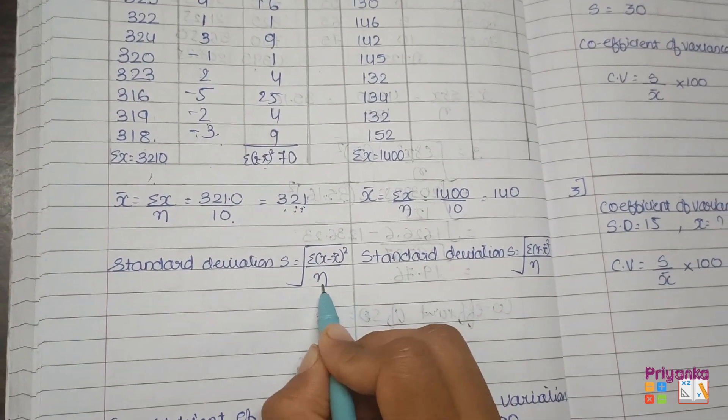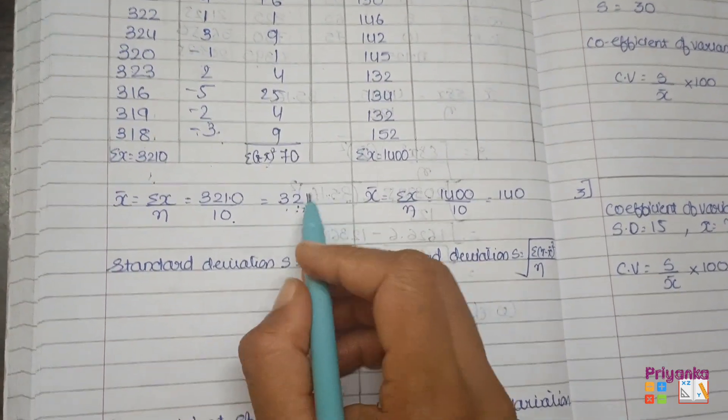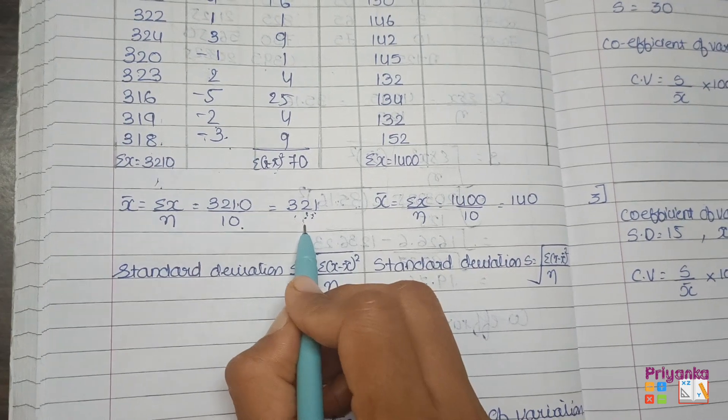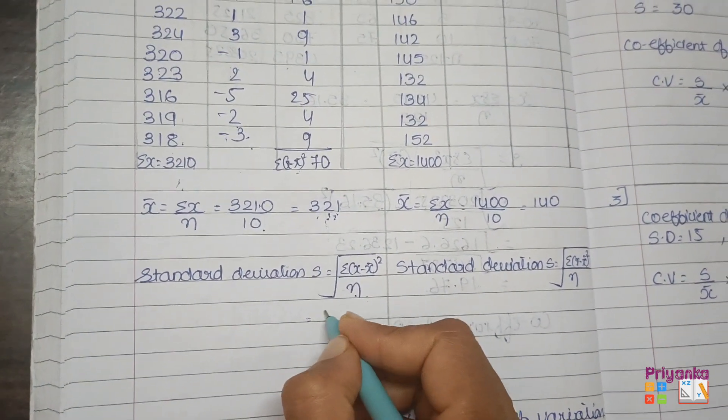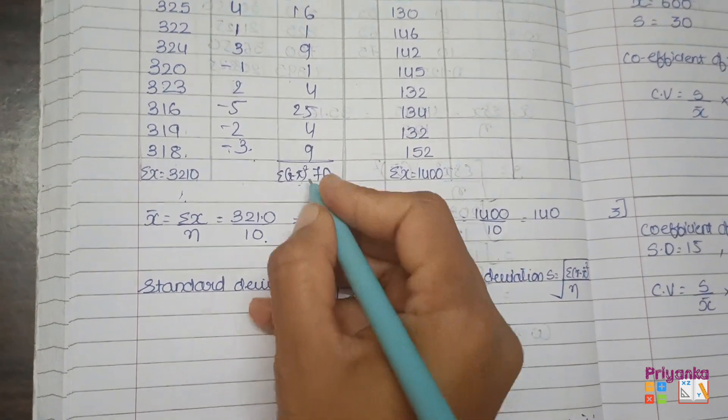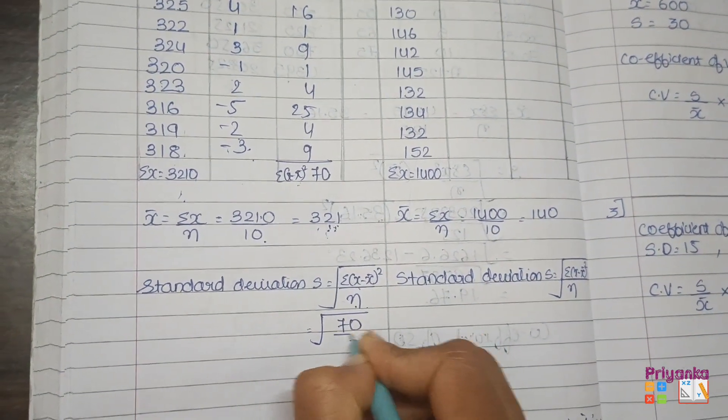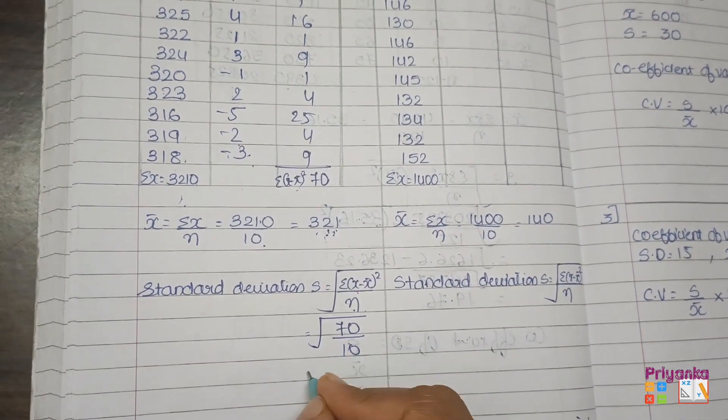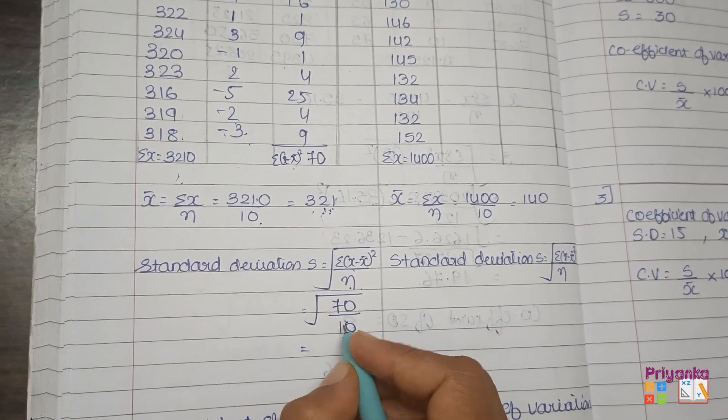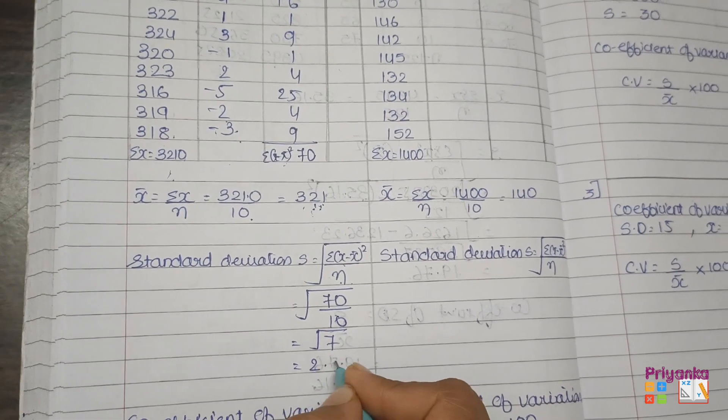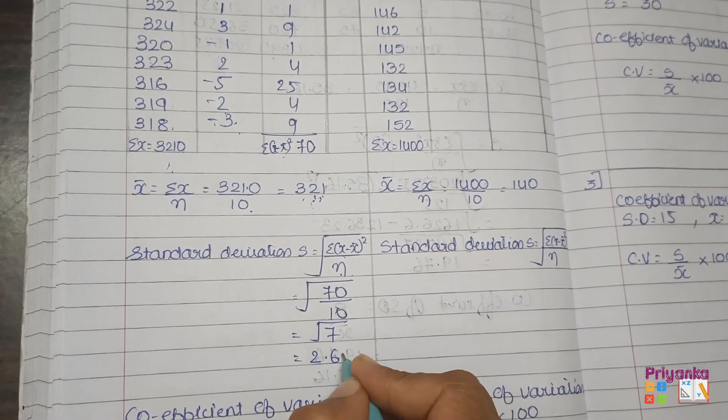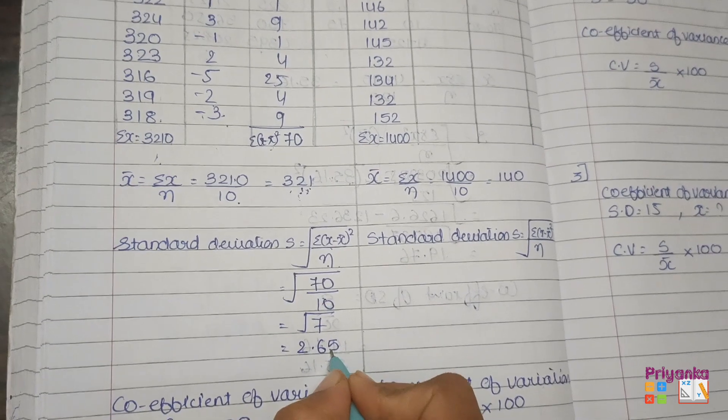Now on that base I am going to find out standard deviation. Remember the answer is in integer, so directly we can use this formula. Under root, the value which we found is 70 and n is 10, that is 7. And if you remove the root of 7 you will get 2.645, so 4 will turn into 5.